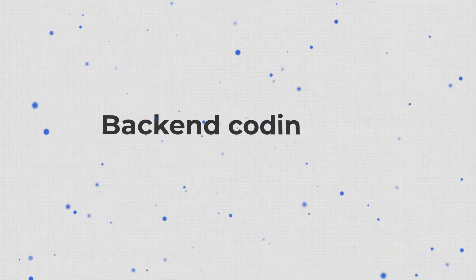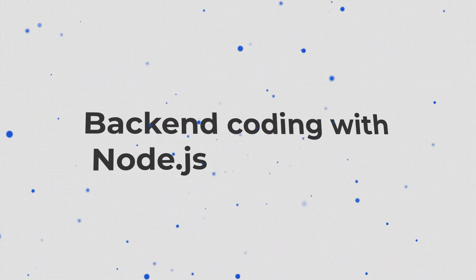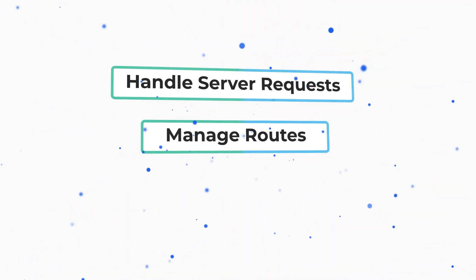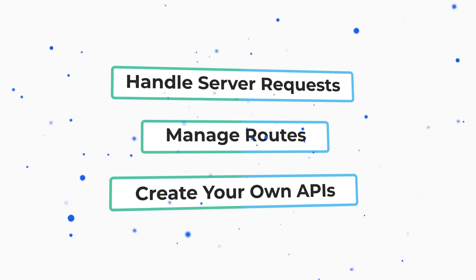If you're not interested in diving deeper into backend development, feel free to skip to the next chapter of this video — otherwise, keep watching, it won't take long. Next, start learning backend coding with Node.js and Express. Node.js lets you run JavaScript on the server side, and Express is a framework that makes building web applications easier. You will learn how to handle server requests, manage routes, and even create your own APIs.